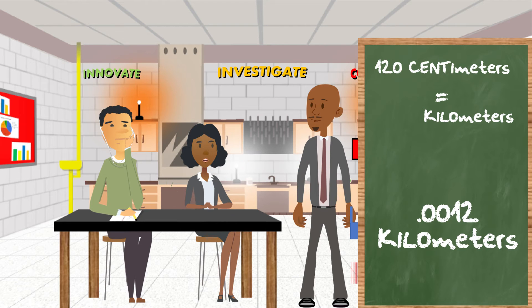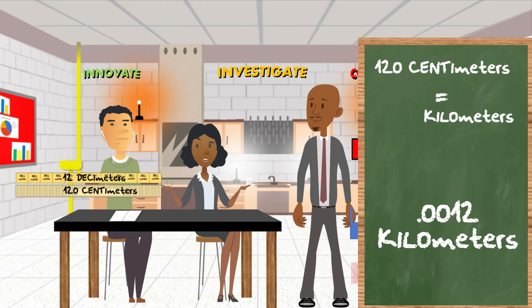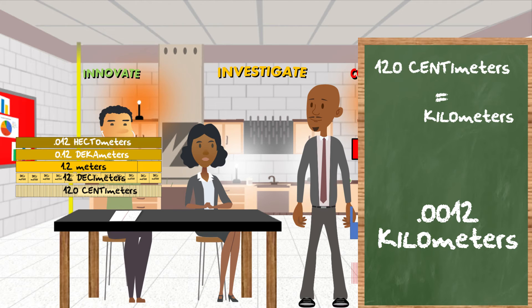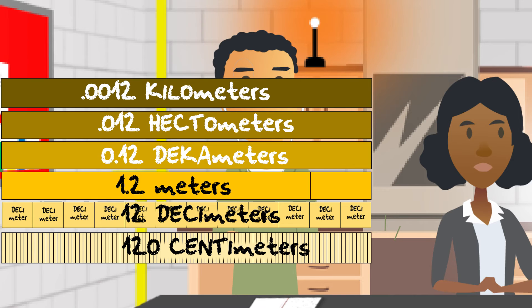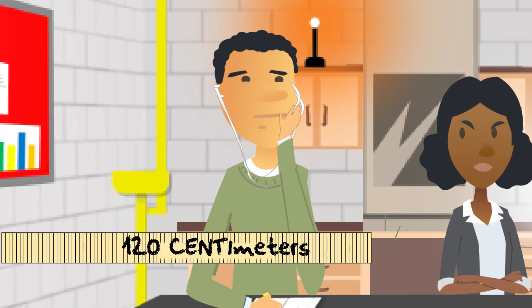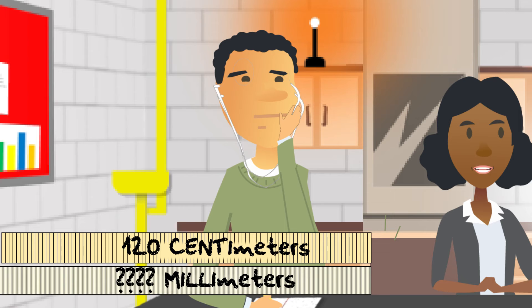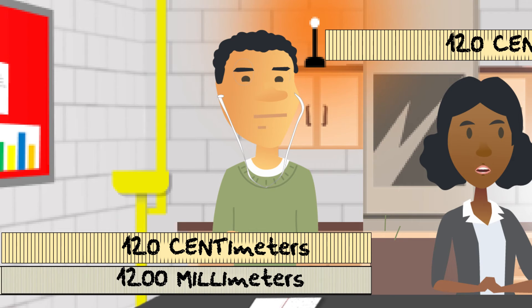0.0012 kilometers. How'd you get that so fast? Well, based on what you said earlier, if this is 120 centimeters, then there are 12 decimeters in that, 1.2 meters in that, 0.12 decameters in that, 0.012 hectometers, and 0.0012 kilometers in that measurement. Just say you move the decimal. How many millimeters are in 120 centimeters? Same way — milli is 10 times smaller than centimeters, so there would be 1,200 millimeters in 120 centimeters.